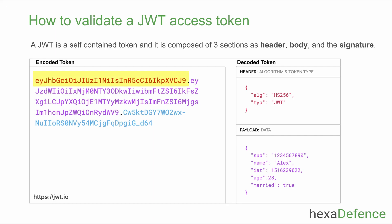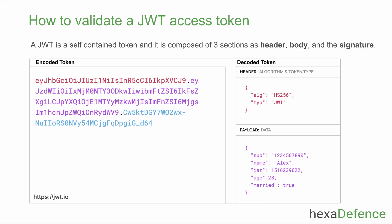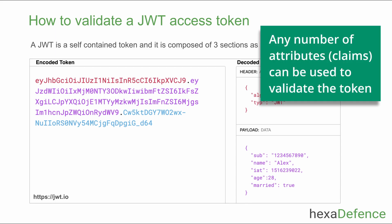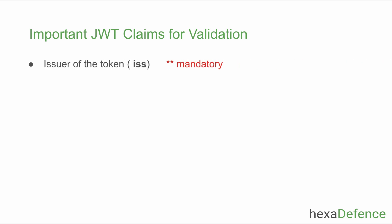A JWT token is composed of three sections: header, body, and signature. The header section contains details like the type of the token and the algorithm used to sign it. The body or payload section contains attributes included in the JWT token — those attributes are called claims. The last section is the signature, which is created using the header, body, and the secret key. If any attribute in the header or body is changed, the signature becomes invalid.